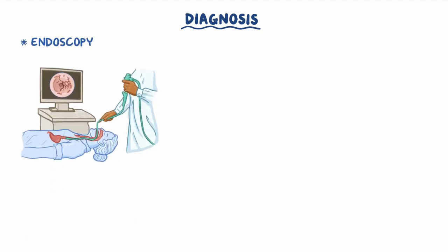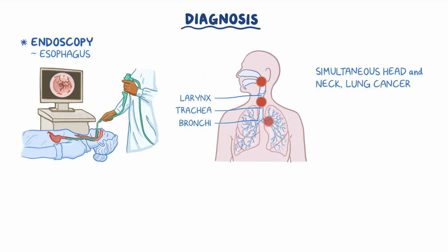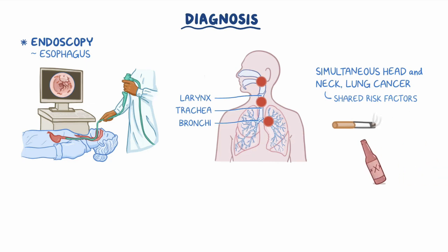Diagnosis of esophageal cancer is essentially made with endoscopy, where a tube with a camera is placed into the esophagus to directly visualize the tumor and take a biopsy. Endoscopy of the larynx, trachea, and bronchi should also be performed, since people with squamous cell carcinoma tend to develop simultaneous head and neck cancer and lung cancer, mainly because these cancers share the same risk factors like smoking, alcohol consumption, and obesity.